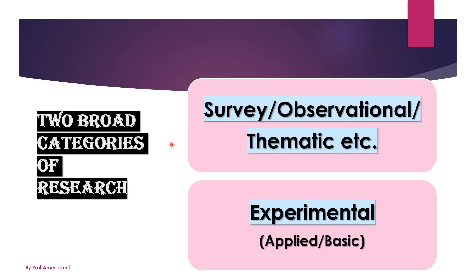Two broad categories of research are survey or observational research — also called thematic research — and experimental research, which is performed either in the field or in a laboratory, and may be applied or basic.